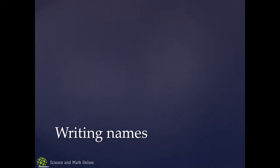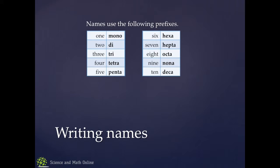When we write the names for covalent compounds, we use prefixes. If you're familiar with Greek prefixes or geometry or some other places, you may have seen these prefixes before. Mono, di, tri, tetra, penta, hexa, hepta, octa, nona, and deca. You got to memorize these. It's pretty essential.